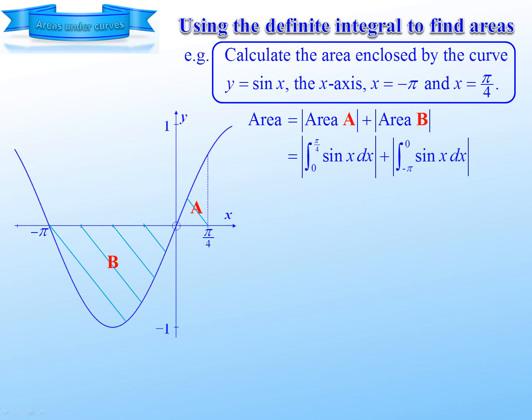Once again, the standard integral becomes negative cos. And we substitute pi by 4, subtract, substitute 0, substitute 0, subtract, substitute negative pi. And on a calculator that gives us 2.29.